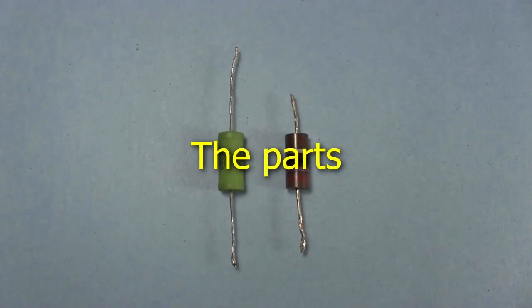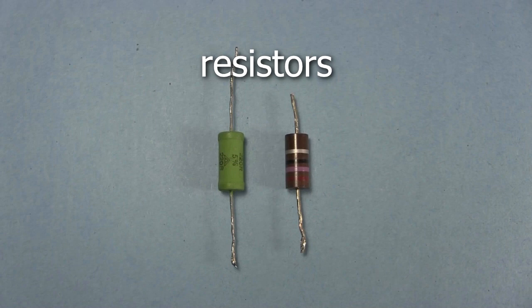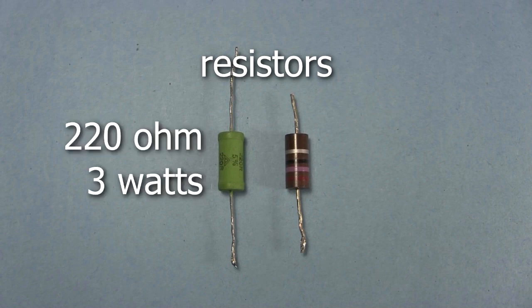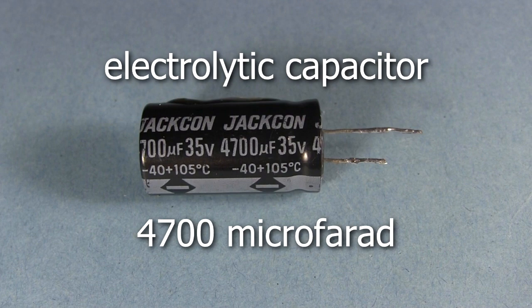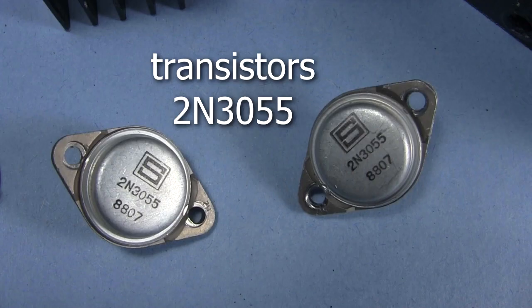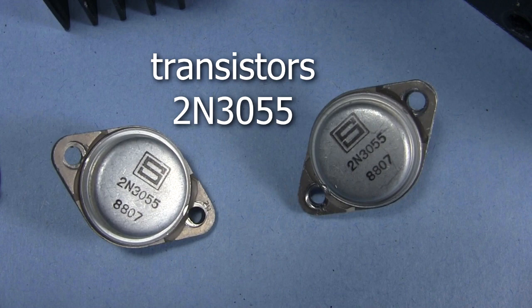I'll start with the parts. There aren't many. You'll need two resistors, a 220 ohm 3 watt resistor and a 27 ohm 2 watt resistor. Also a 4700 microfarad electrolytic capacitor. You'll need two 2N3055 power transistors.